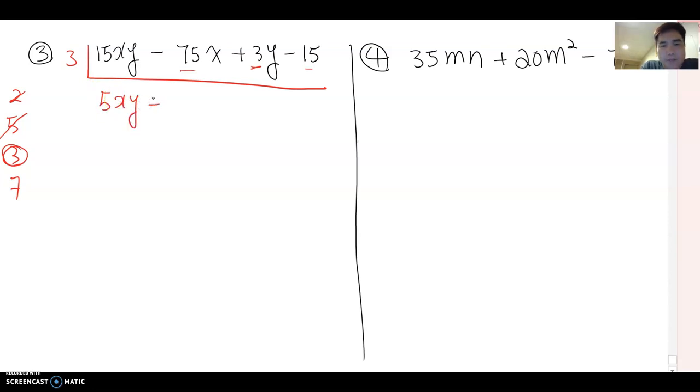Then this becomes 5xy minus 25x, if you divide 75 by three then you come out to 25, and then plus y minus 5 here. Now do you see any other common factor out of these four terms? No more.